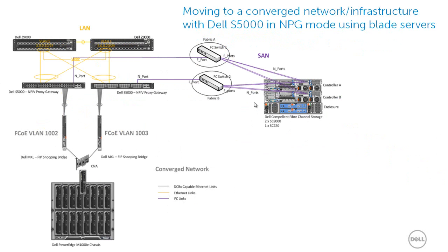In this next diagram, you can see a similar deployment with Dell PowerEdge blade servers. The main difference here is that an MXL or IOE blade switch is configured as a FIP snooping bridge or FCoE transit switch, which simply passes the LAN and FCoE traffic up to the S5000 to separate out and handle.